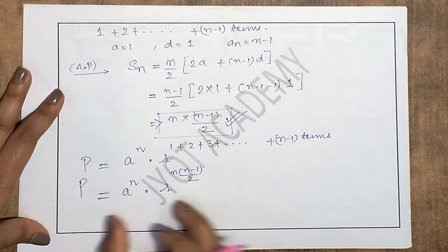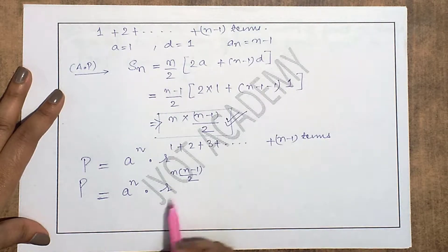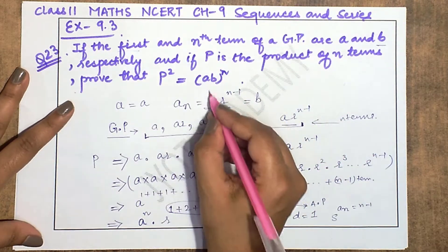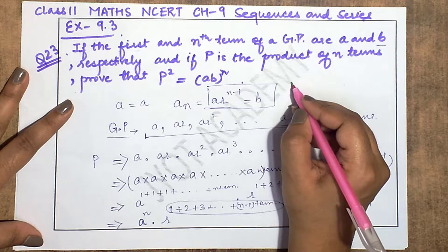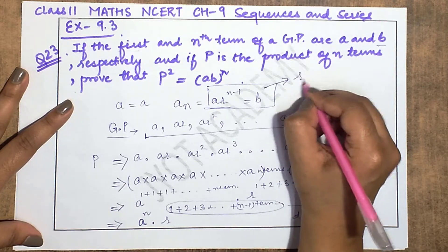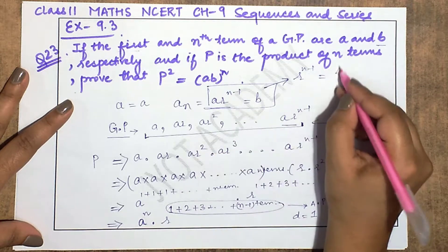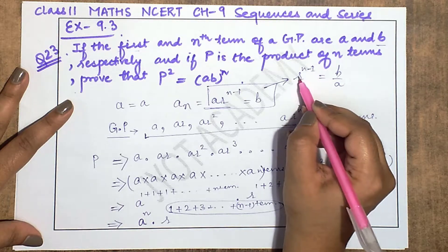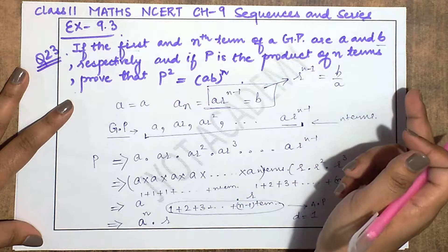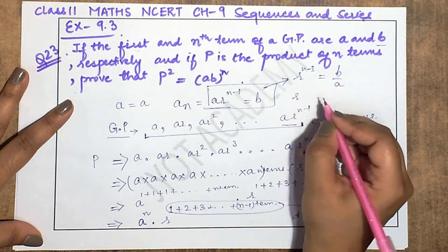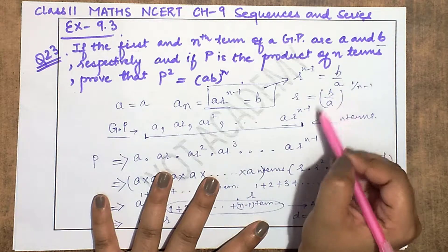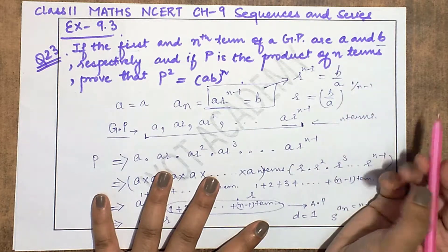Now I will find the value of r. From what was given, the nth term of the geometric progression equals b, i.e., ar^(n-1) = b. Dividing both sides by a gives r^(n-1) = b/a. Shifting the power (n-1) to the right-hand side gives r = (b/a)^(1/(n-1)).